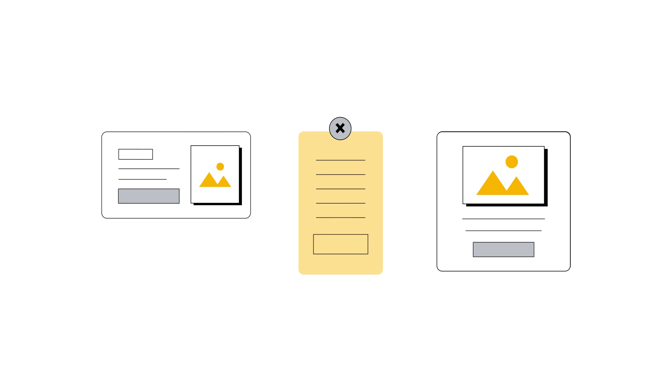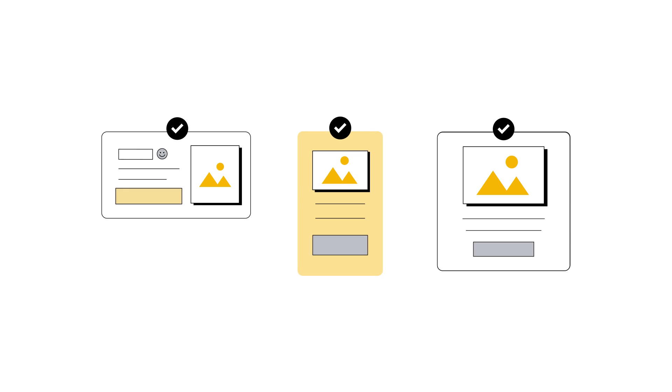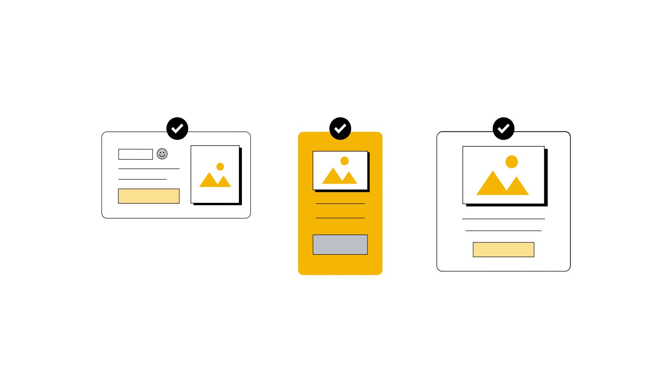So we know creative is important, but how do you know which elements within help to move the needle? Machine learning technology within BigQuery allows for a scaled creative analysis. It can generate insights from successful creative to understand their impact on ads performance, assessing elements as specific as objects, emoticons, text, or colors to help you determine what is driving the most impact.